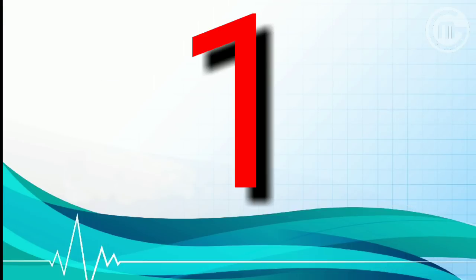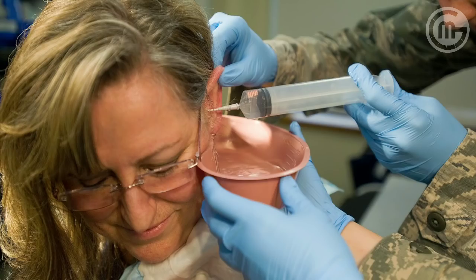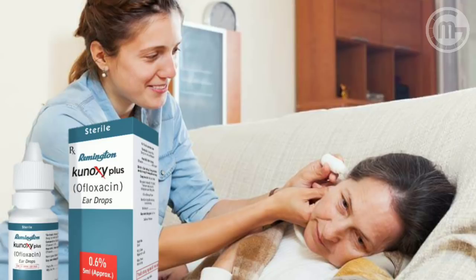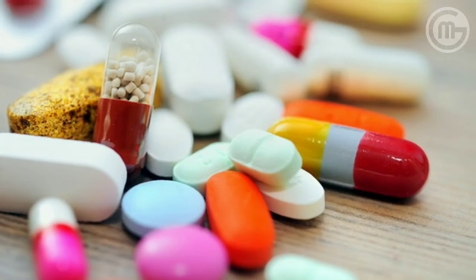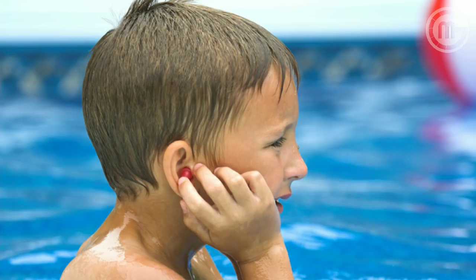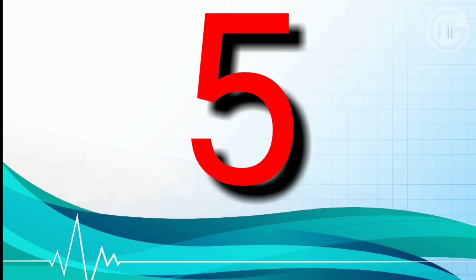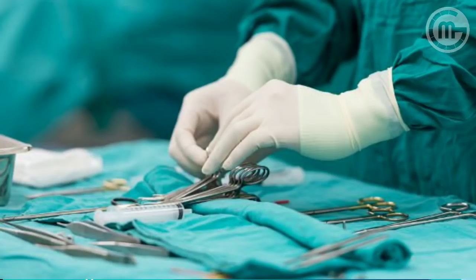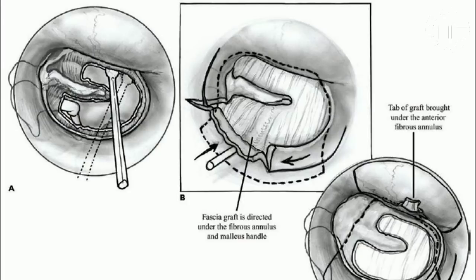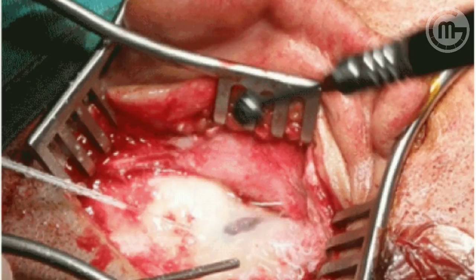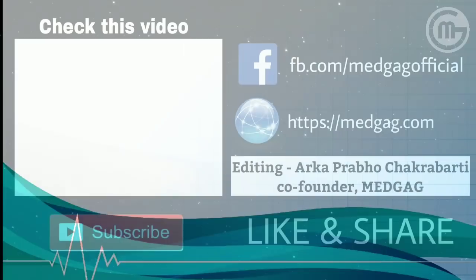Now come to the treatment. Number one, aural toilet — mopping with absorbent cotton buds, suction, and clearance of all discharge. Number two, antibiotic ear drops, combined with steroid which have local anti-inflammatory effect. Number three, systemic antibiotics. Number four, precautions for patients — keep water out of ear during bathing. Number five, treatment of contributory causes like adenoids and nasal allergy. Number six, surgical treatment — once the ear is dry, myringoplasty or tympanoplasty can be done to restore hearing. Number seven, in case of cholesteatoma, canal wall down or canal wall up procedures are taken. Thank you for watching this video.